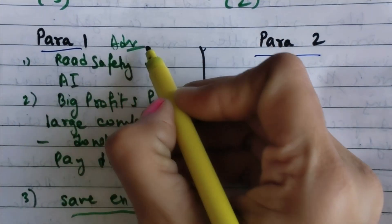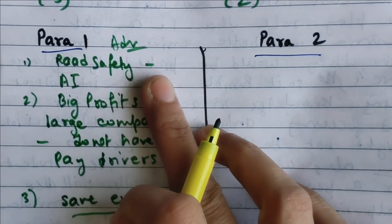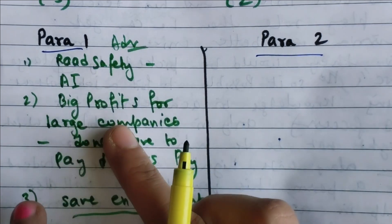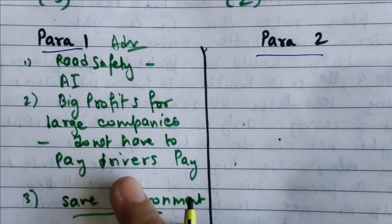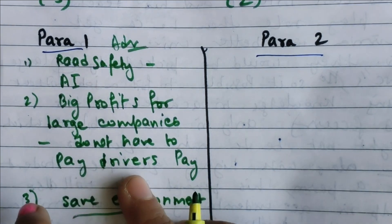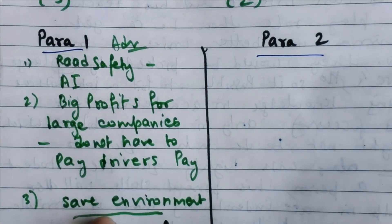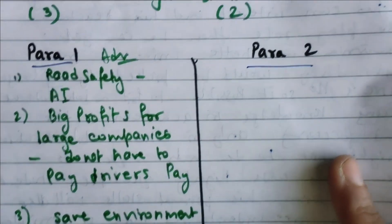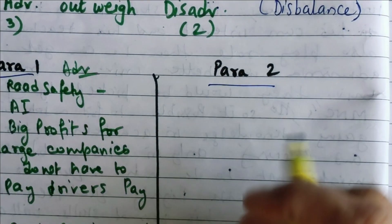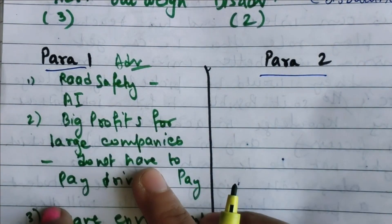For advantages: road safety — less errors when a machine is driving instead of a person. Big profits for large companies because they don't have to pay for drivers' salaries or incentives. Third: we can save our environment. Now for the second paragraph, what are the disadvantages?